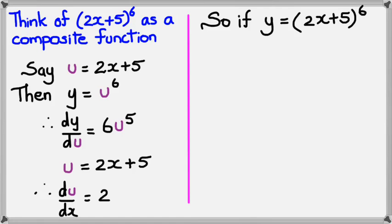So if y is equal to 2x plus 5 to the power of 6, then this is what the chain rule is. With the chain rule, we can say that dy/dx is equal to dy/du multiplied by du/dx.